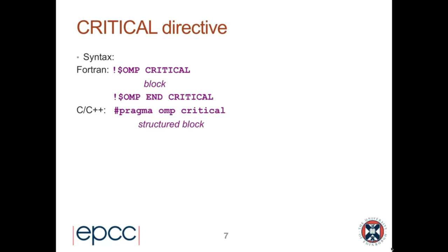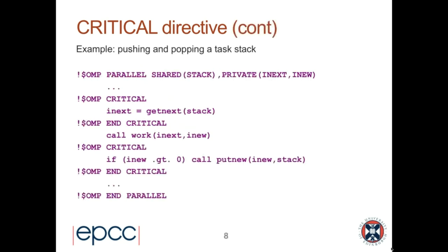The syntax is: Fortran uses `!$omp critical` followed by the block, then `end critical`. C/C++ uses `#pragma omp critical` followed by a structured block — either a single statement or statements in curly braces. A straightforward use case is adding values to a shared variable, though in practice that pattern is usually better handled using reductions.